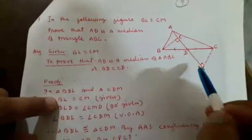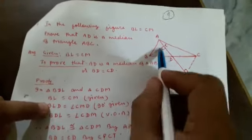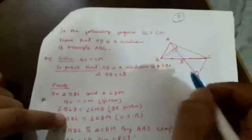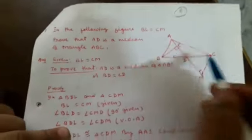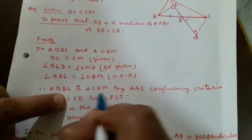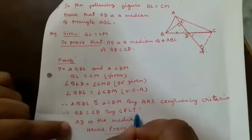Proof: In triangle BDL and triangle CDM — BL is equal to CM as given; angle BLD is equal to angle CMD which is 90 degrees as already given; and angle BDL is equal to angle CDM by vertically opposite angles. Therefore triangle BDL is congruent to triangle CDM by AAS congruency criteria. Therefore BD is equal to CD by CPCT.